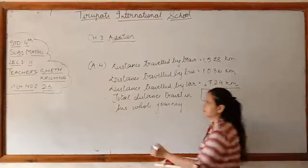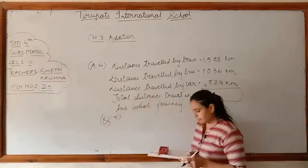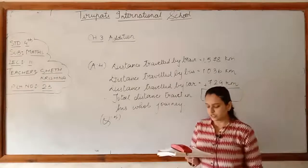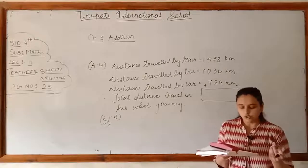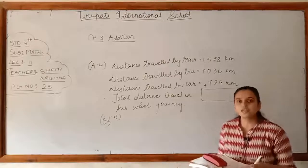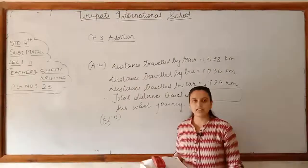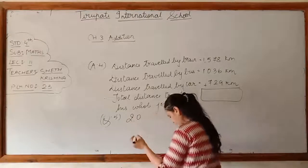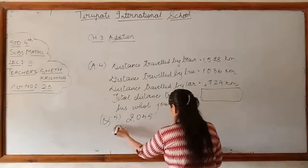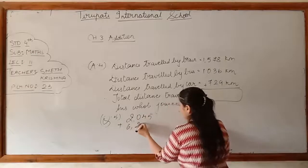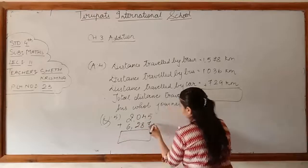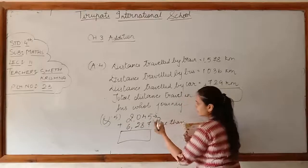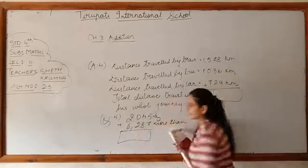Question 5: What number is 2,045 more than 6,287? 'More than' means greater, so you have to add: 2,045 plus 6,287. The question asks what number is that much more than 6,287, so add the two numbers. Do this yourself.